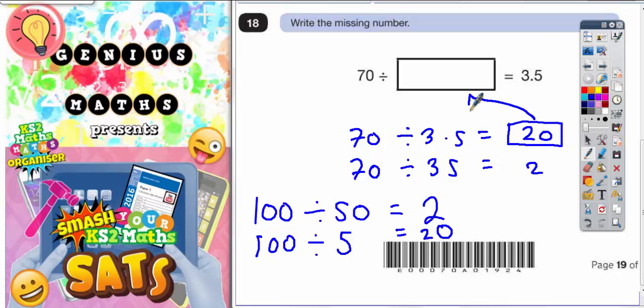So if 70 divided by 3.5 is 20, 20 must be what goes in here. 70 divided by 20 equals 3.5.